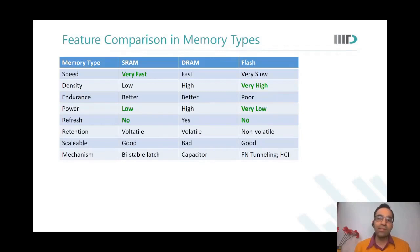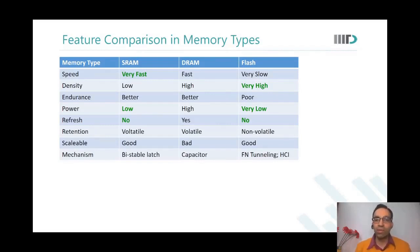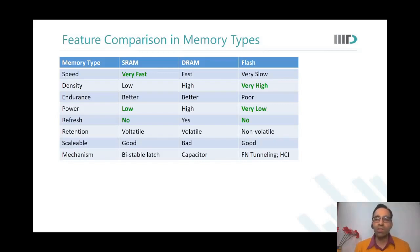There is another reason why flash cannot be used in L1 or L2 caches. Look at the third row — the parameter called endurance. Endurance means how many reads and writes can I do on this particular memory. For SRAMs and DRAMs, it's almost infinite.